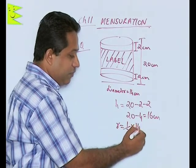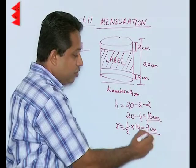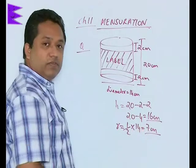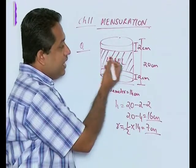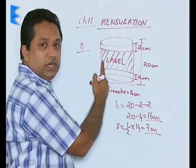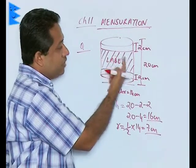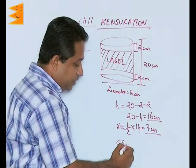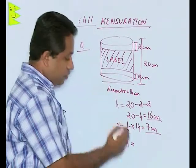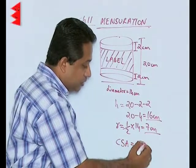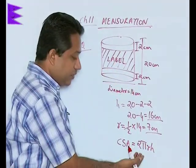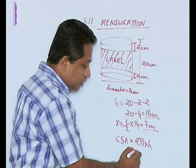The diameter is 14 centimeters, so the radius will be half of 14, which is 7 centimeters. We have found the height and radius of the label. Since the label is pasted around the entire cylinder, we need to find the curved surface area. The label is in the form of a cylinder, so we will use the formula 2πrh.